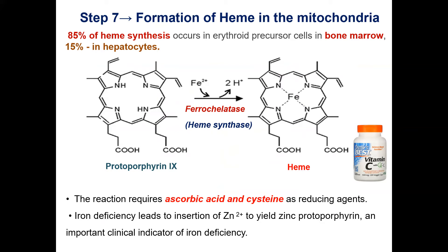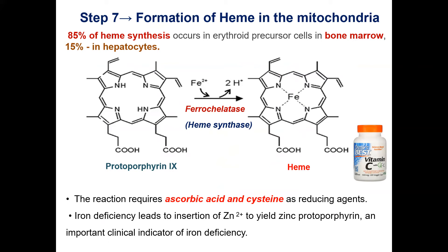Formation of heme involves incorporation of ferrous iron into protoporphyrin-9. This reaction is catalyzed by ferrochelatase, also known as HMB synthase. The reaction requires vitamin C, ascorbic acid, and the amino acid cysteine as reducing agents.